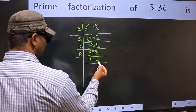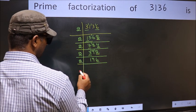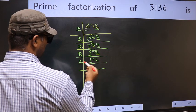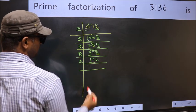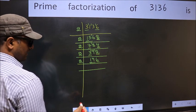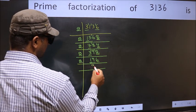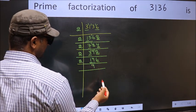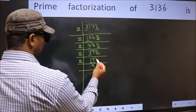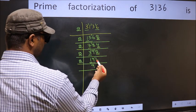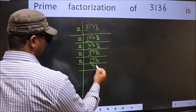Now the last digit is 6, so take 2. First number 1 is smaller than 2, so take 2 numbers: 19. A number close to 19 in the 2 table is 2×9=18. 19 minus 18 is 1, carried forward 16. When do we get 16 in the 2 table? 2×8=16.